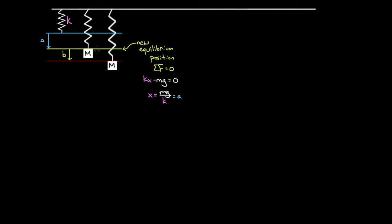Now let's ask: if we take this mass and pull it down an extra amount B from the new equilibrium position, the spring is stretched extra, pulling up with more force than gravity, so the mass accelerates upward. It reaches the equilibrium position with some speed, shoots past, then gravity wins and pulls it back — it oscillates back and forth. We want to find the speed of the mass when it passes through the equilibrium position after being released from rest at distance B below it.